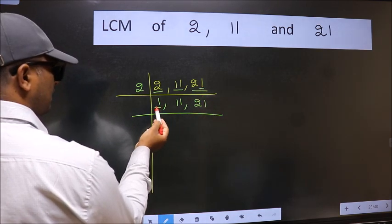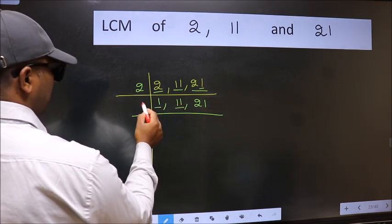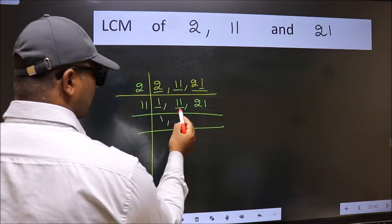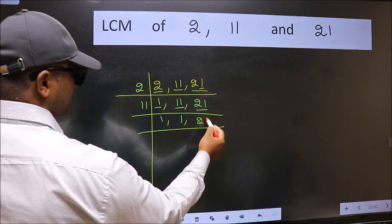Now we got 1 here so focus on the next number 11. 11 is a prime number so 11 goes into 11. The other number 21 not divisible by 11 so we write it down as it is.